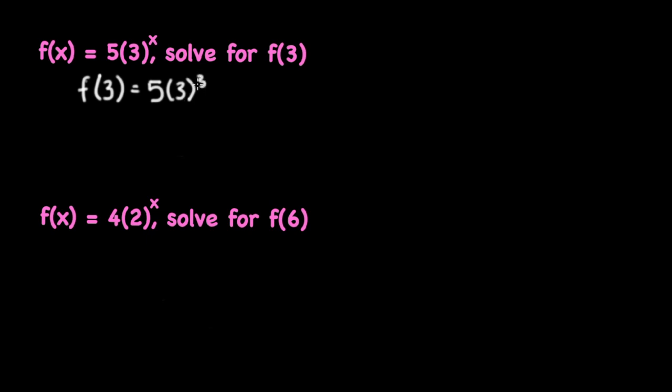Now, we have to remember order of operations when we solve this equation and PEMDAS states we do our parentheses first, which we don't have any, and then we do our exponents, which means that we have to evaluate 3 to the third first, which is 27. So, f of 3 is equal to 5 times 27. And this is simple multiplication and that gives us 135.